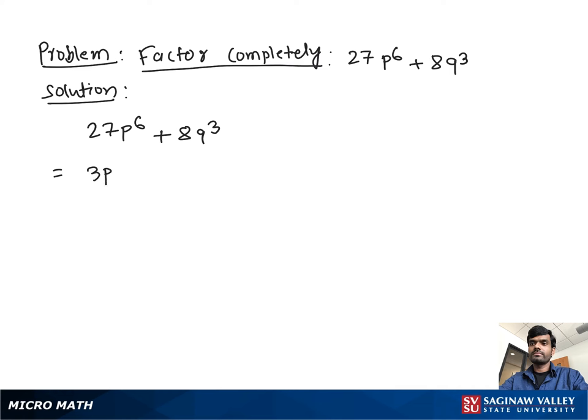So you can write 27P^6 as (3P^2)^3 plus 8Q^3 as (2Q)^3. Now it looks like A^3 + B^3 form.